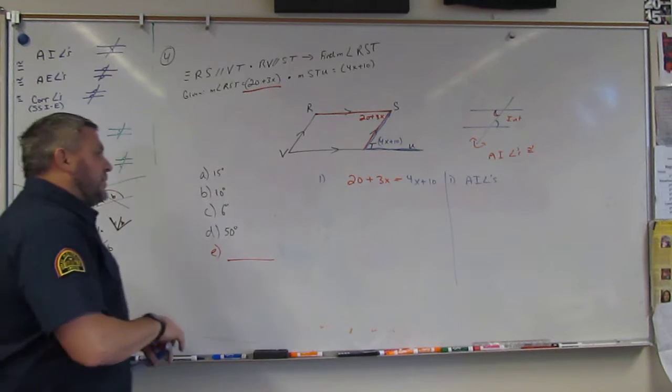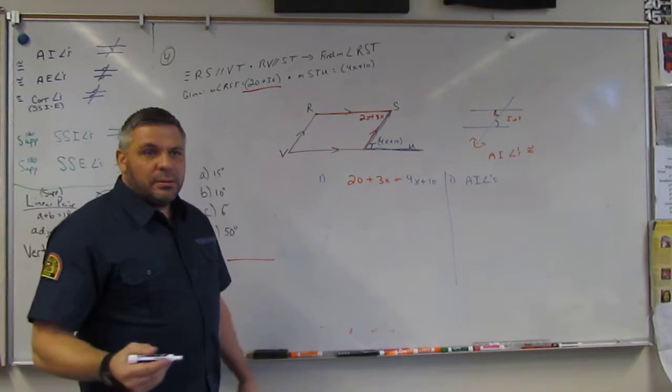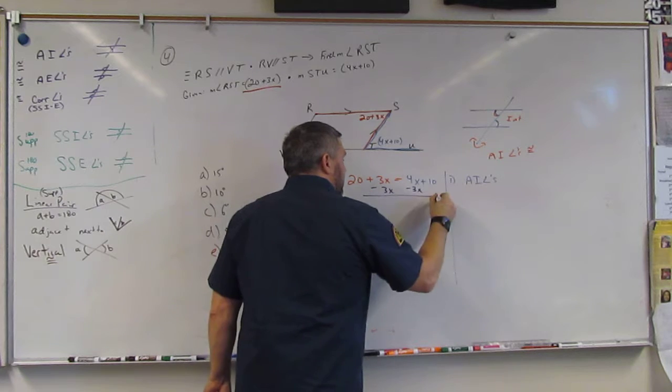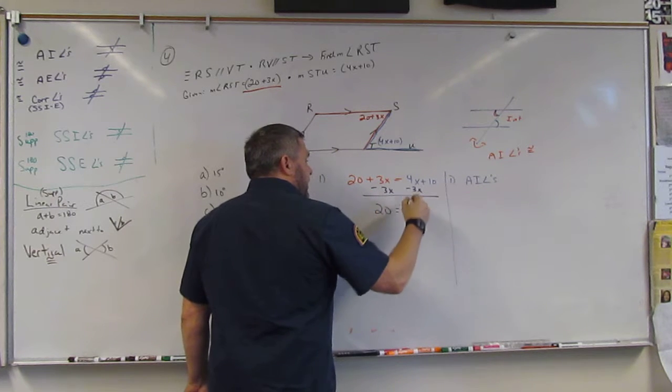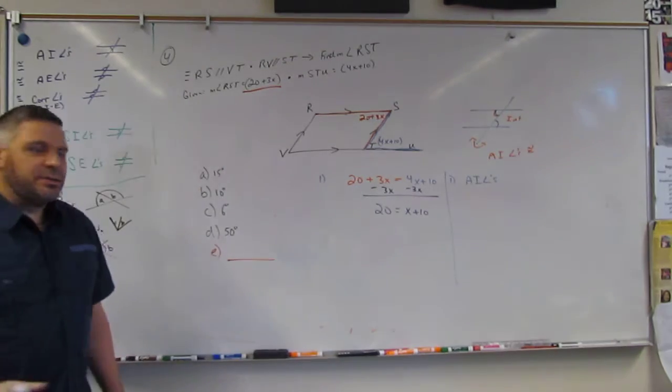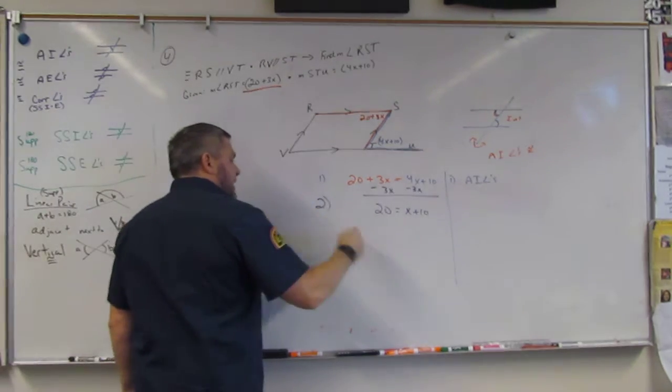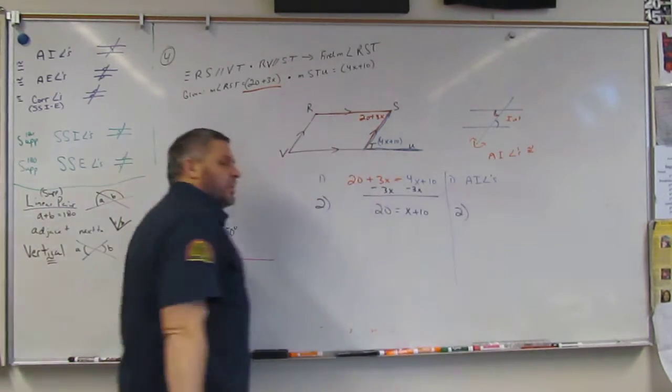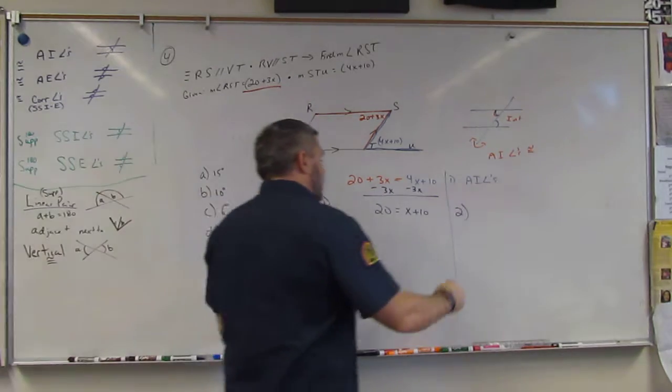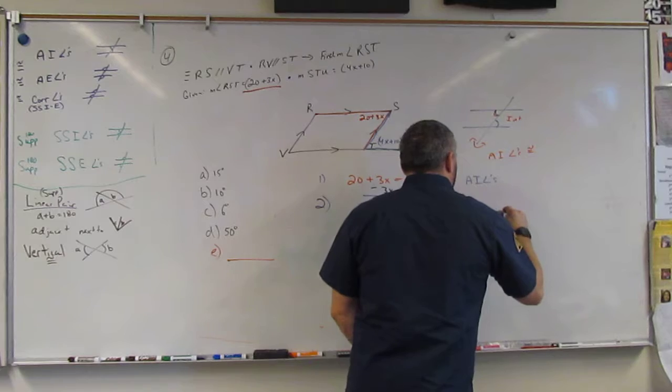Alright, what do we do? Move your lowest x. 20 is equal to x plus 10. What's that called? That's step two. Subtraction property of equality. Good. Subtraction property of equality.